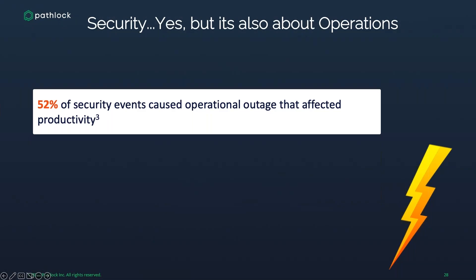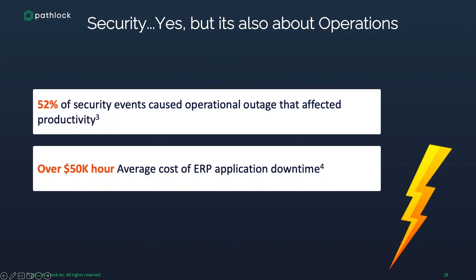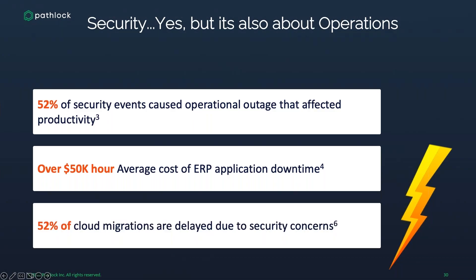Security is also about operations. 52% of security events cause operational outages that affect productivity. Over $50,000 per hour is the average cost of ERP application downtime — it is extremely expensive. And 52% of cloud migrations are delayed due to security concerns. Some organizations think moving to the cloud makes them more secure because they're handing off responsibilities, but they still have responsibilities inside their system. You just can't throw all of those security issues over the fence.